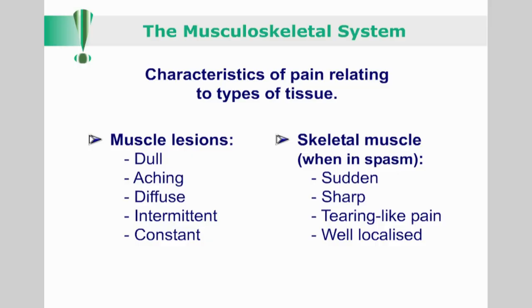Let us now consider the characteristics and quality of pain from different types of connective tissues. Muscle lesions will produce dull, aching, diffuse, intermittent, or constant pain. If skeletal muscle goes into spasm, it will produce a sharp, tearing-like pain which is well localized.